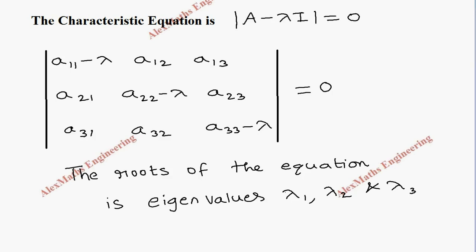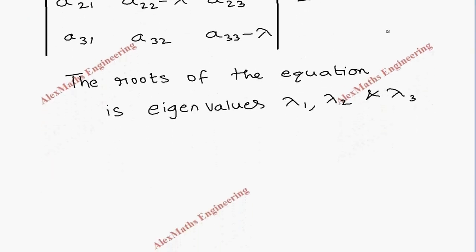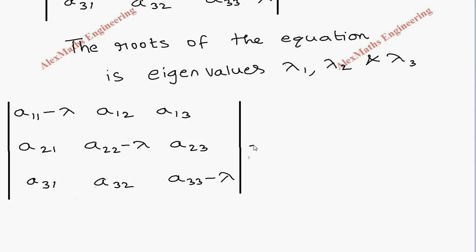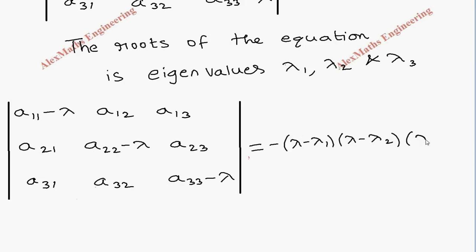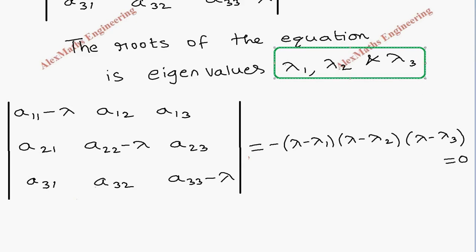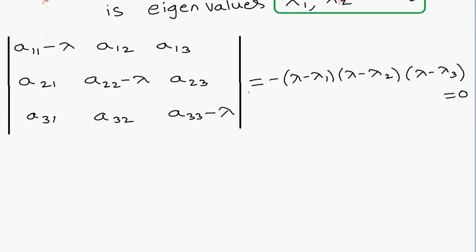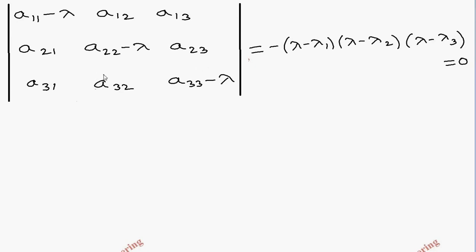It will have 3 eigenvalues. This determinant on expanding finally gives factors like (lambda minus lambda 1) into (lambda minus lambda 2) into (lambda minus lambda 3), which is equal to 0. By equating these factors to 0, we got the eigenvalues lambda 1, lambda 2, and lambda 3. Now, we are going to expand this determinant in the usual way.